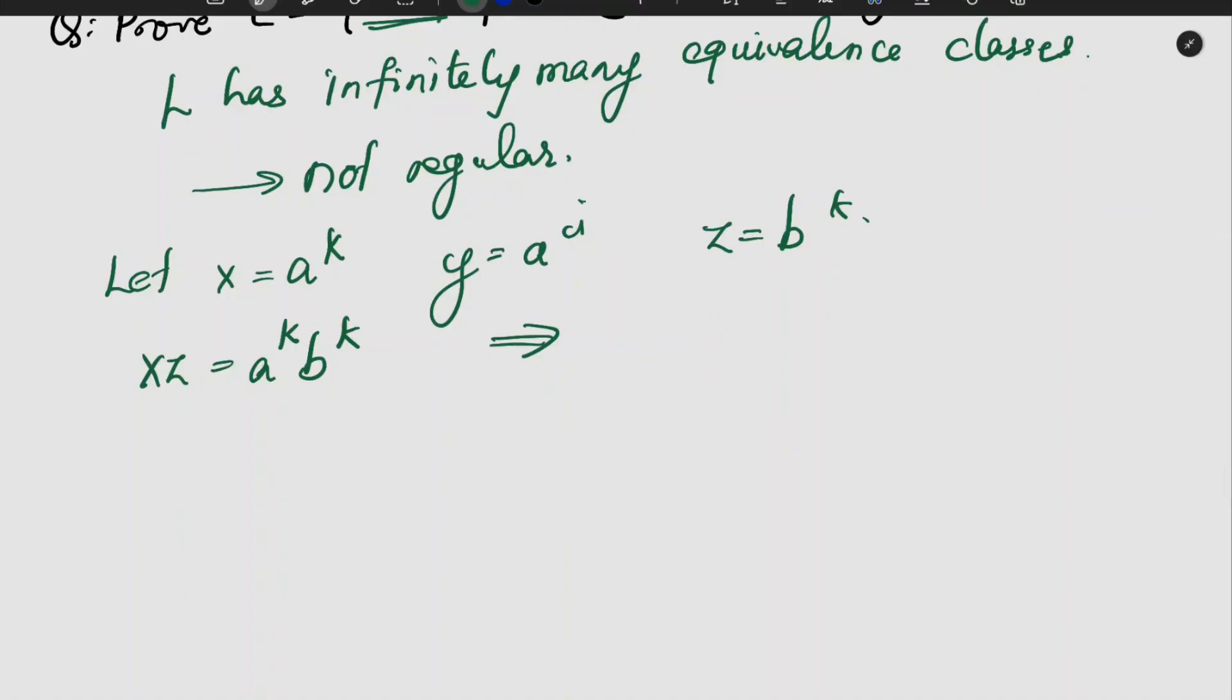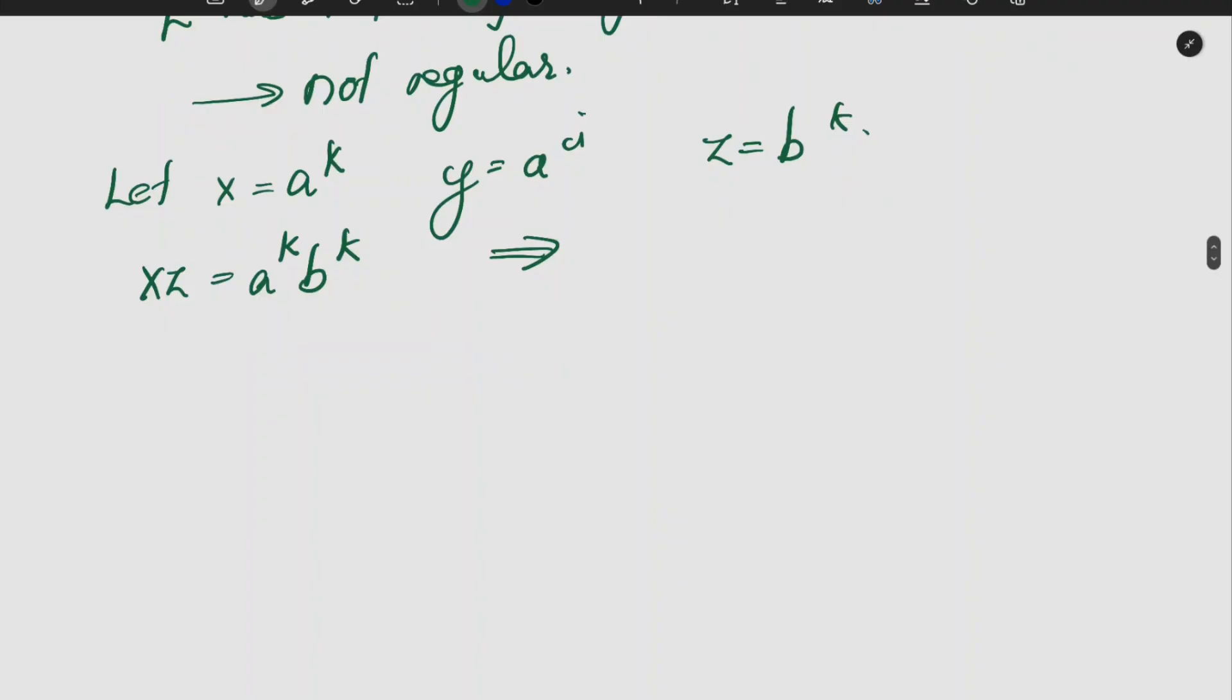If we are taking a combination like yz, a raised to i b raised to k, this will not be a part of the language.